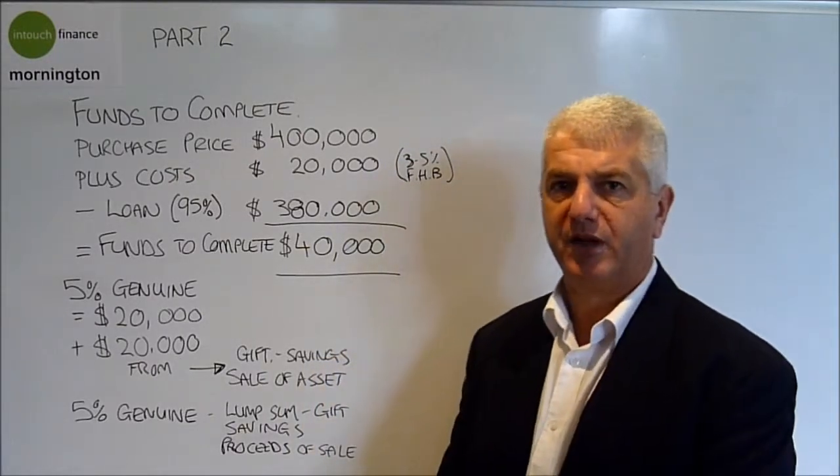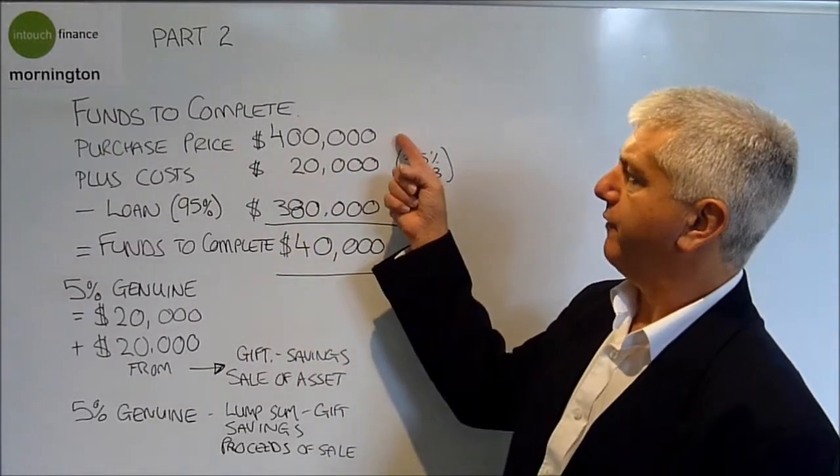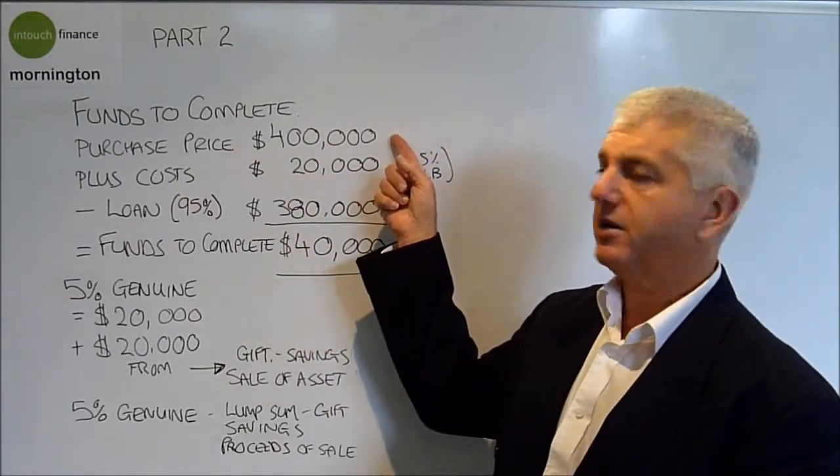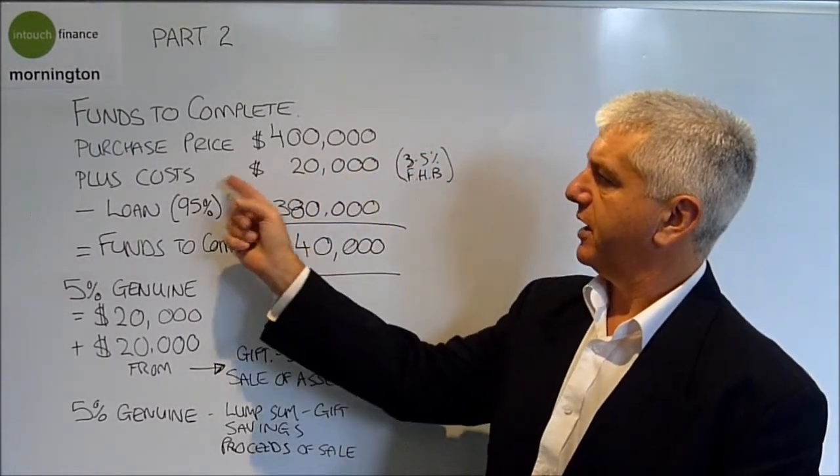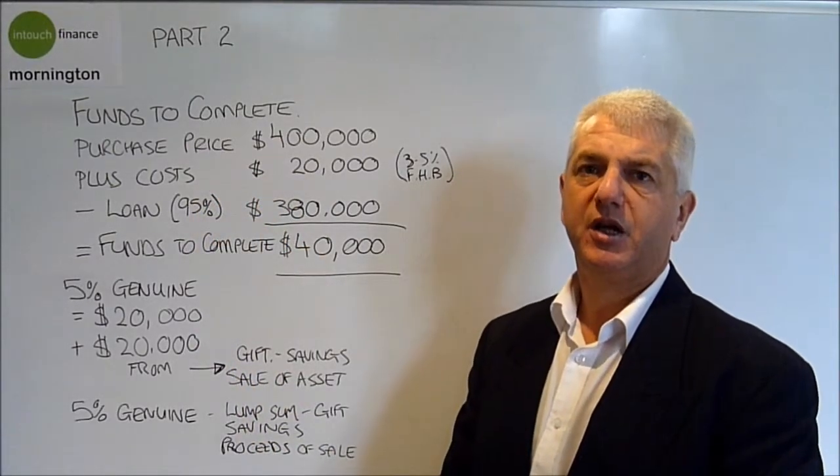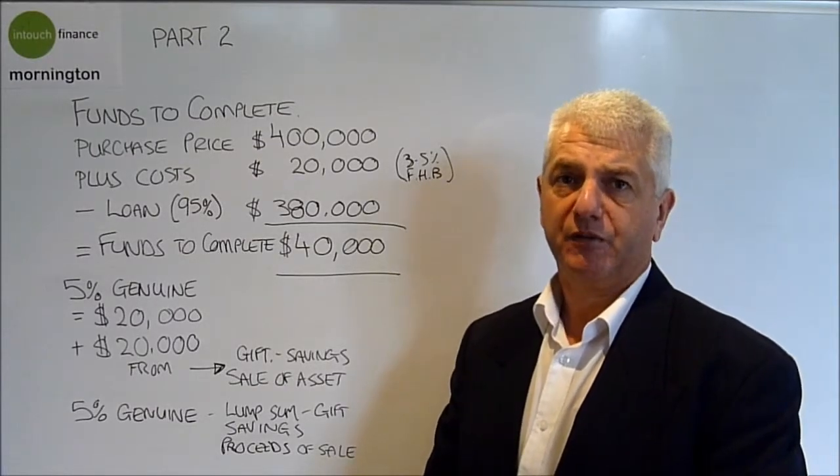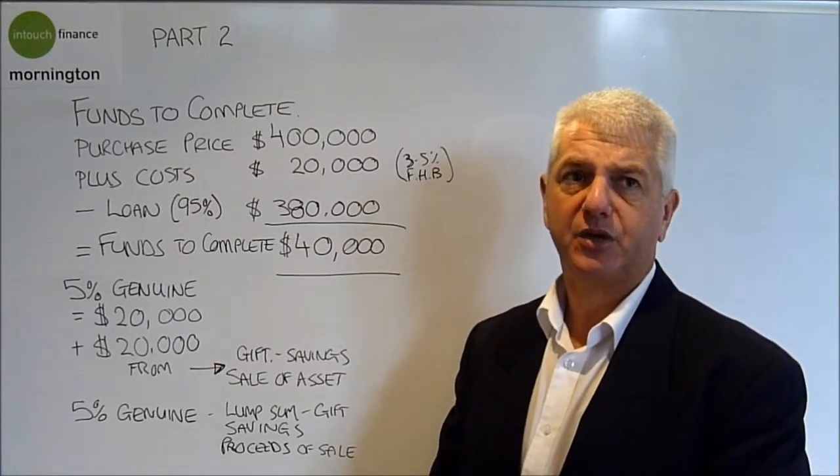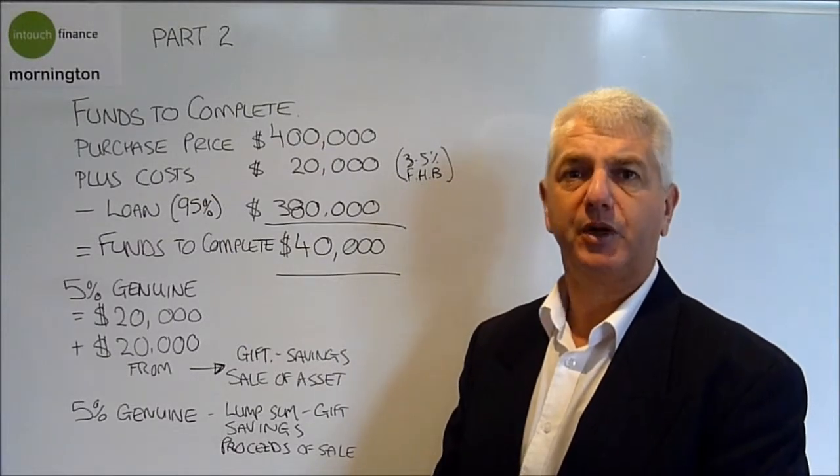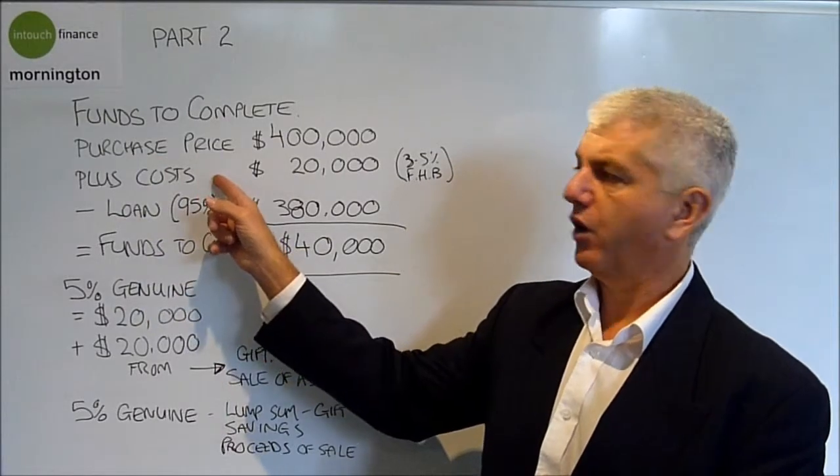In this example I'm using a $400,000 house as a starting price. So we need $400,000 to buy the house. We also have to cover the costs. Those costs include stamp duty, transfer fees, application fees, conveyancing fees, and some ancillary costs in relation to building and pest inspections. We look for that under the costs.